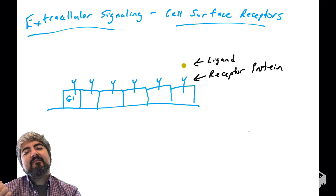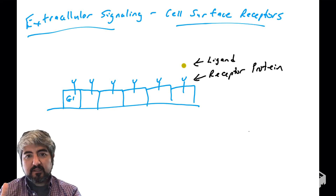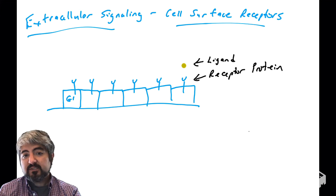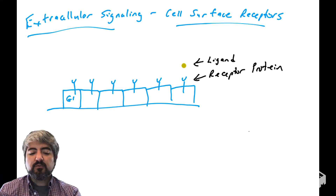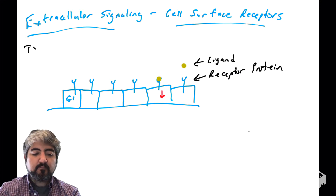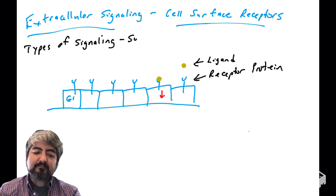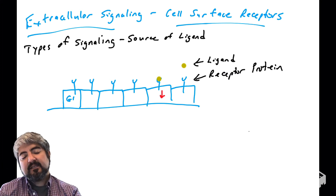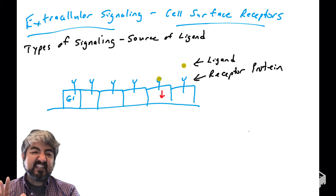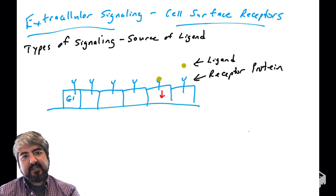Receptors have ligands. Ligands refer to molecules — in many instances, proteins — that bind to the receptor. There is a ligand binding domain of the receptor, and this binding is going to send a signal into the cell and get that cell to do something — in this case, go through the cell cycle.